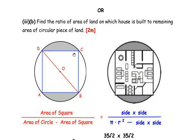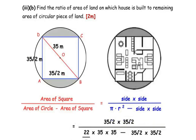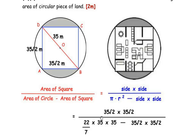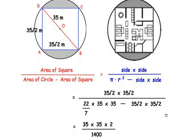Area of square = side × side = 35√2 × 35√2. Area of circle − area of square = πr² − (35√2)² = (22/7) × 35 × 35 − 35√2 × 35√2. So the ratio becomes: (35√2 × 35√2) / ((22/7) × 35² − 35√2 × 35√2).